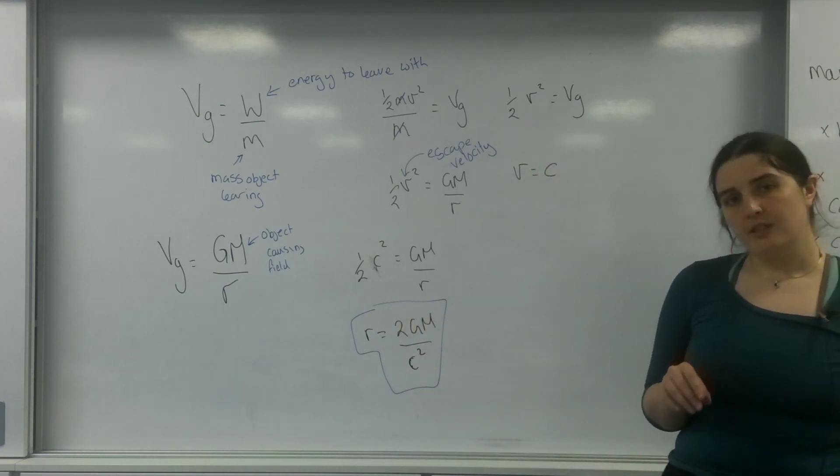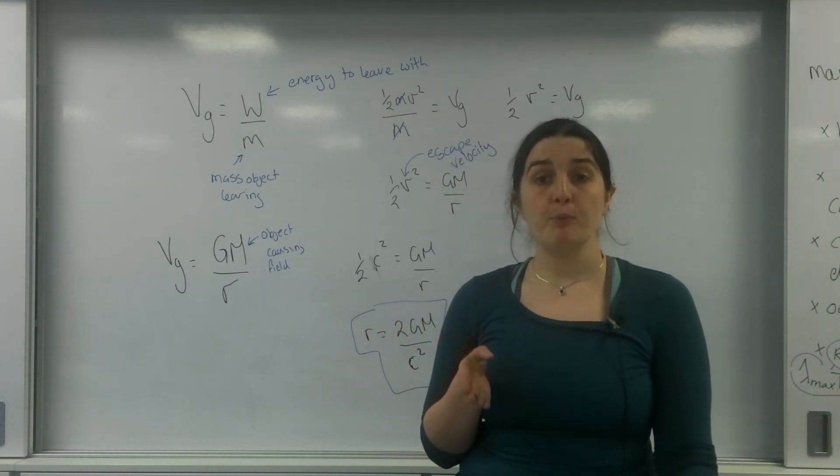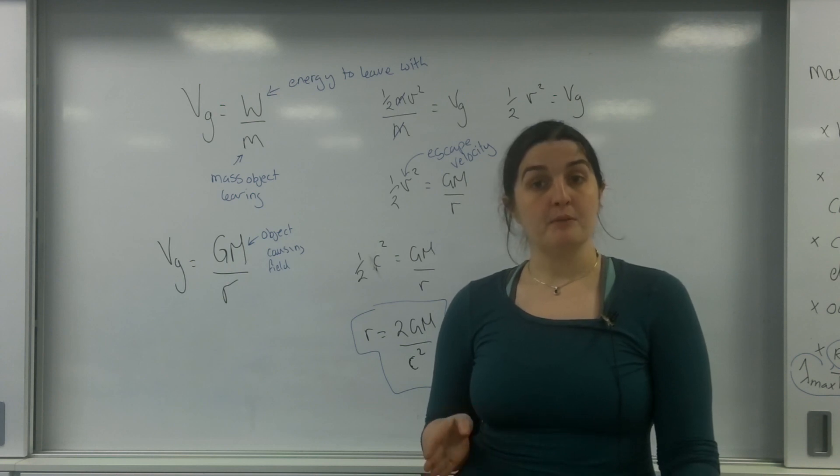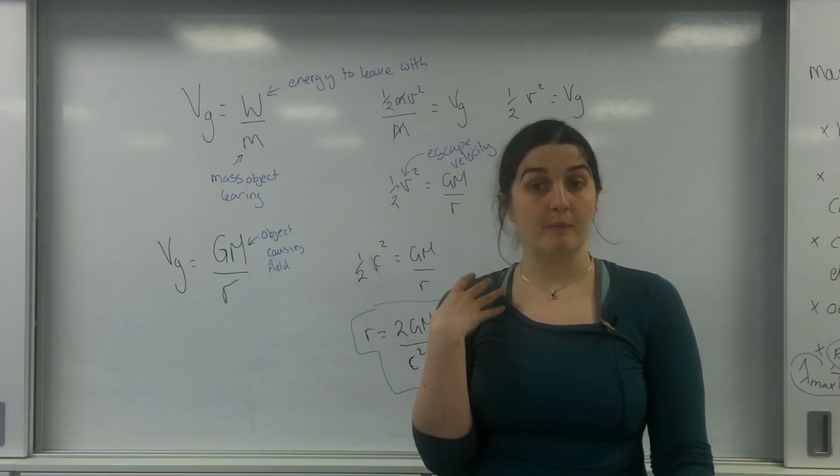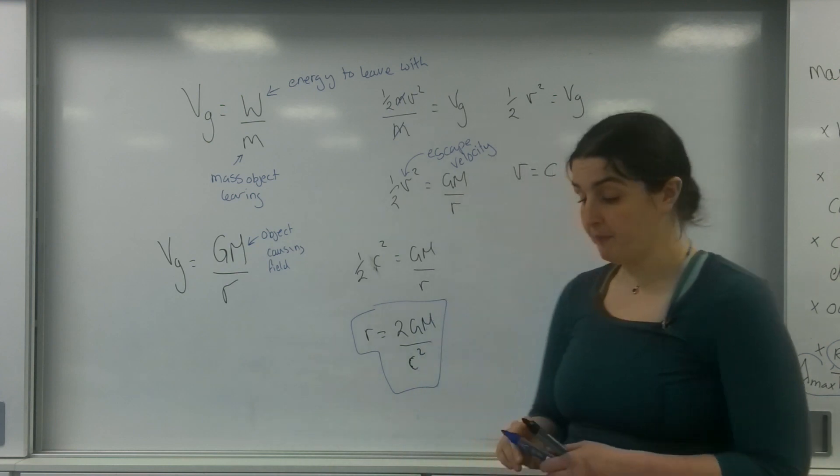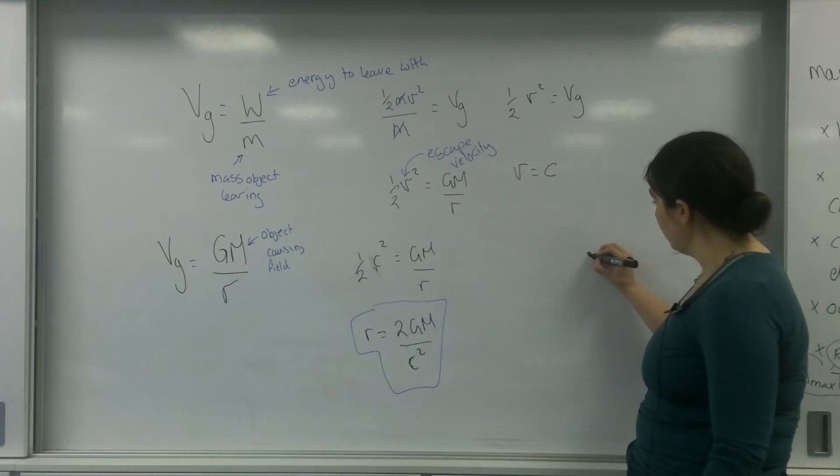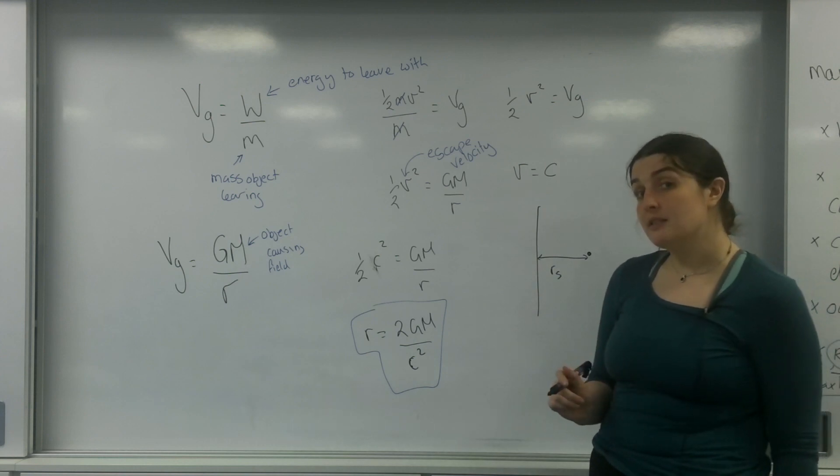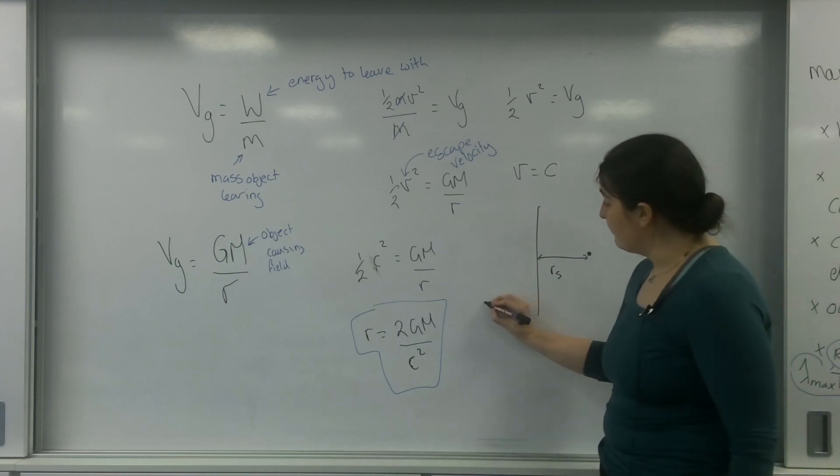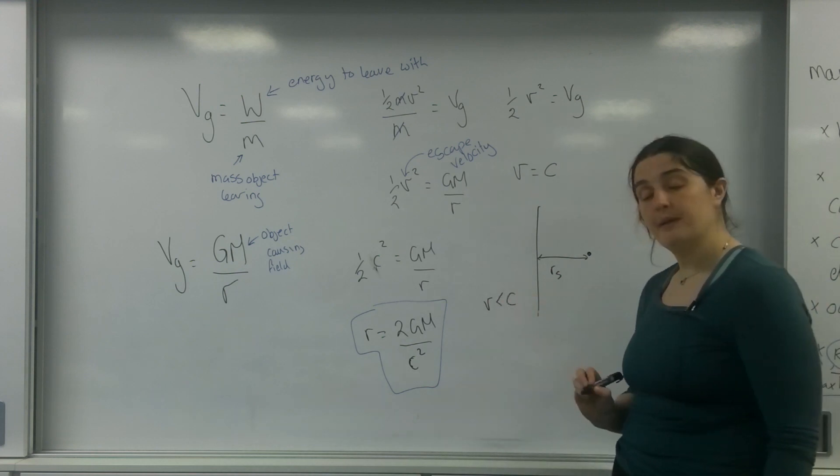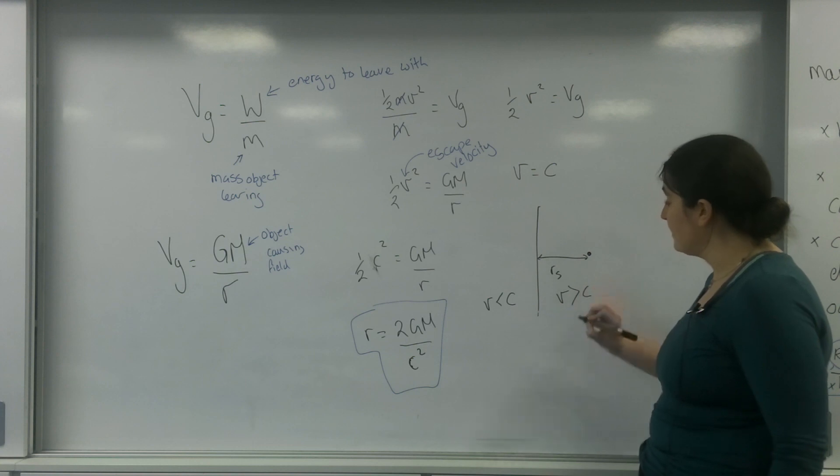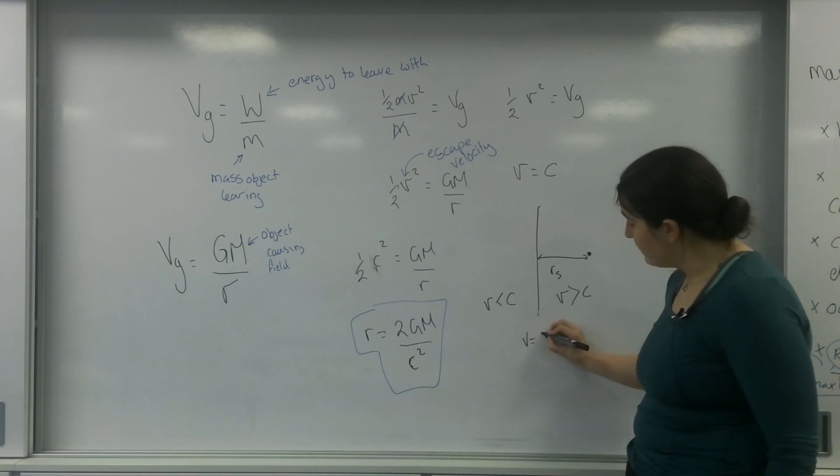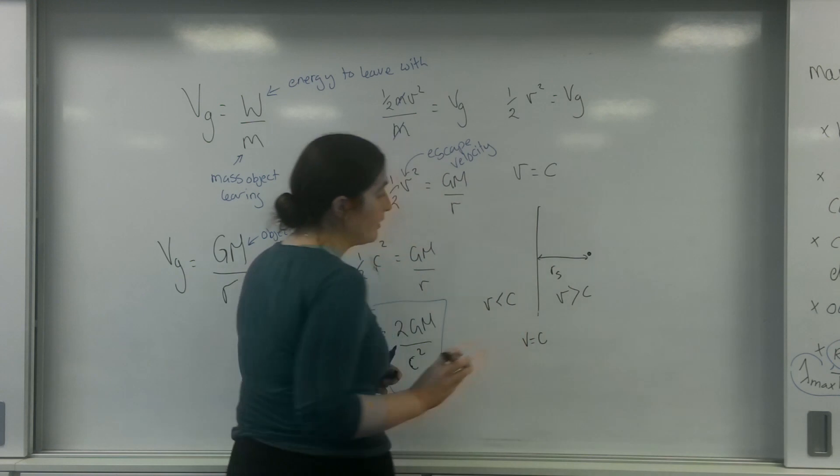So this r is the distance from the centre of the mass to the object. My escape velocity is the speed of light. If you can imagine, here's my star. This here is the Schwarzschild radius. So this is what we call the event horizon. On this side, if I wanted to leave the gravitational field, my velocity would have to be less than the speed of light. On this side, my velocity has to be greater than the speed of light. And here, my velocity is equal to the speed of light.